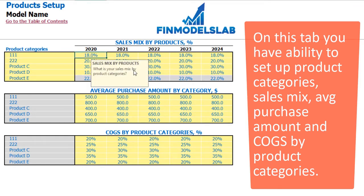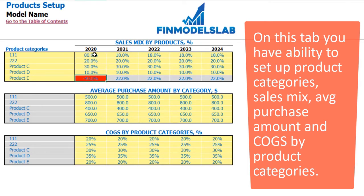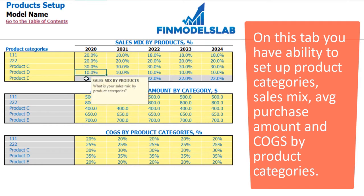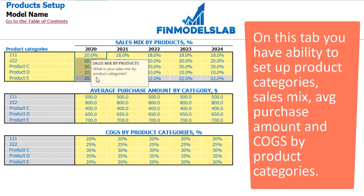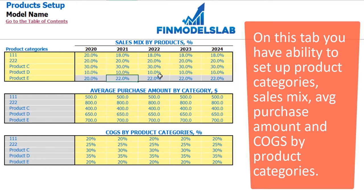For example, if you input something wrong — say 80% for your product — then product number 5, which is 100% minus the sum of the previous 4 products, will be minus 40% and you will see a red color, meaning you input something wrong. If the breakdown is set correctly and the sum of your first 4 categories is less than 100%, then product E will be everything else up to 100%. The total should always be 100%, and if correct, it will show in gray.